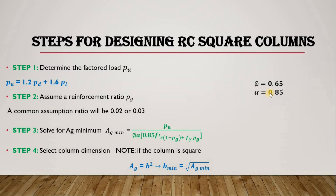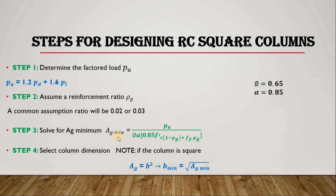For a square column, φ is 0.65 and α is 0.85. The full formula for minimum gross area is: Ag_min = PU / [φ × α × (0.85 × fc' × (1 − ρg) + fy × ρg)], where fc' is the compressive strength of the concrete and fy is the yield strength of the steel.